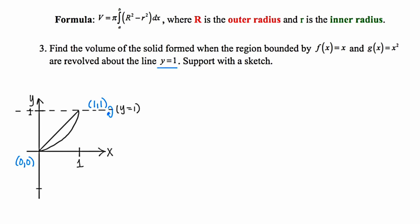The trick is going to be to come up with expressions for the outer radius and the inner radius. Starting with the outer radius, I'll grab my red pen and place the tip on the axis of revolution, projecting straight down to the farthest curve. This point is x comma g(x), meaning the bottom portion is g(x), and from there to the axis is 1 unit. So the solid red segment is the difference between 1 and g(x), making the outer radius 1 minus g(x).